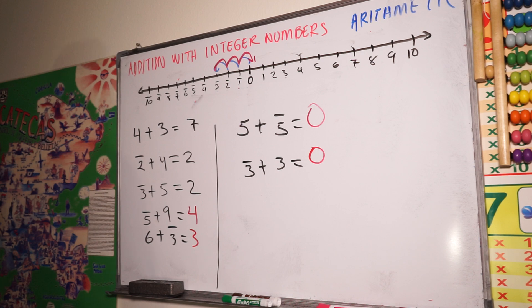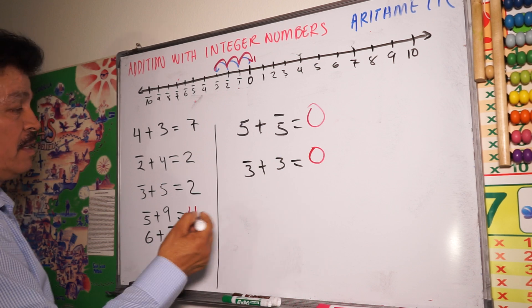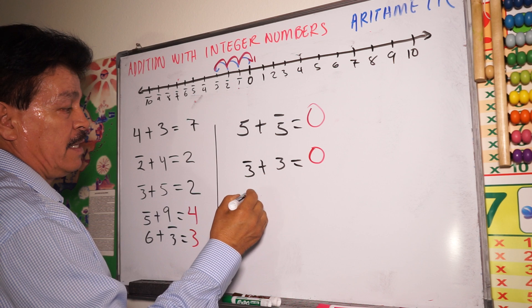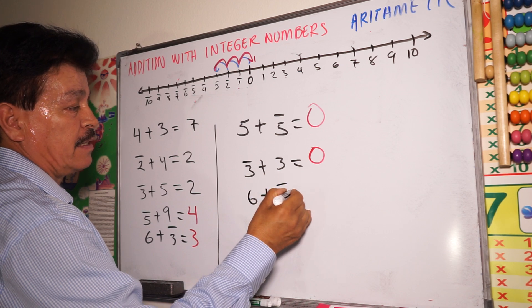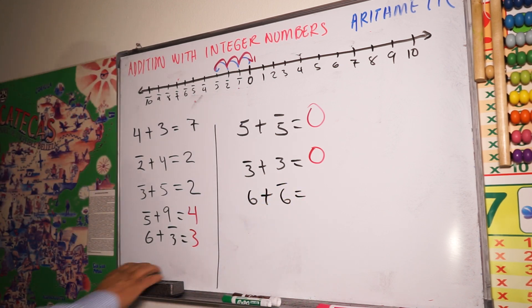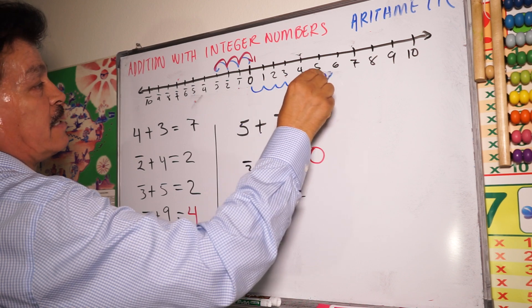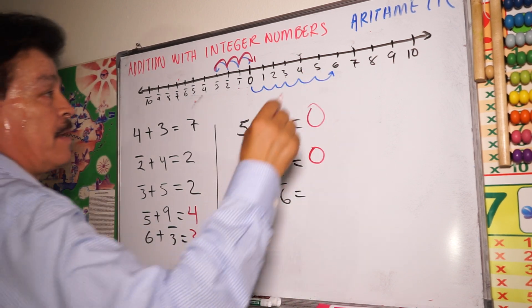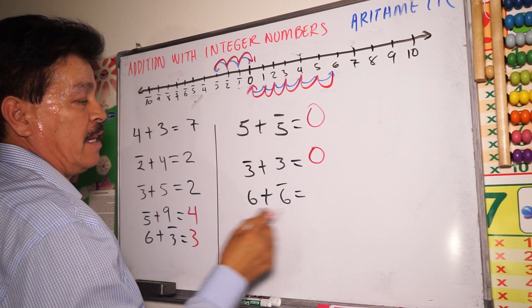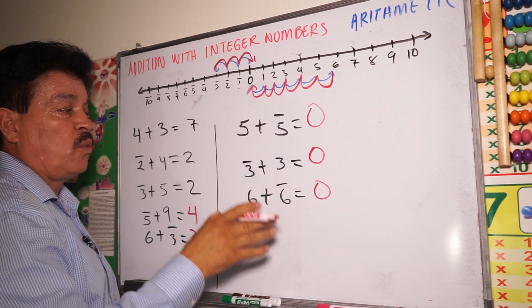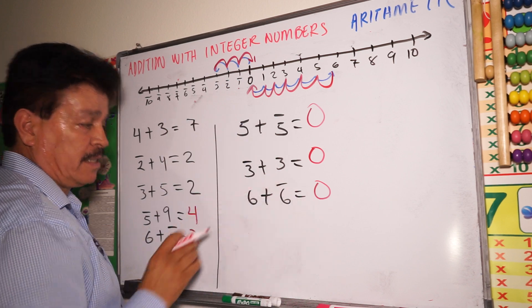More problems — it's very simple, it is not hard. Six plus minus six — another symmetrical. Move to six — one, two, three, four, five, six. Then plus minus six — one, two, three, four, five, six. The addition of symmetrical numbers always is zero. When you add symmetrical numbers, the result will be zero.